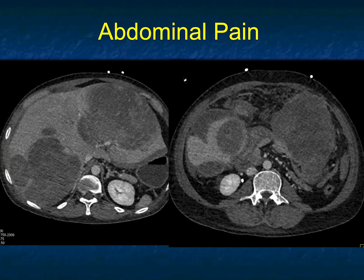You've got to consider metastasis. METs that bleed — melanoma is up there. But cystic METs, you've got to be thinking about GIST tumors, ovarian cancer, maybe melanoma. This ended up being a metastatic germ cell tumor to the liver with spontaneous rupture of several of the lesions and hemoperitoneum.